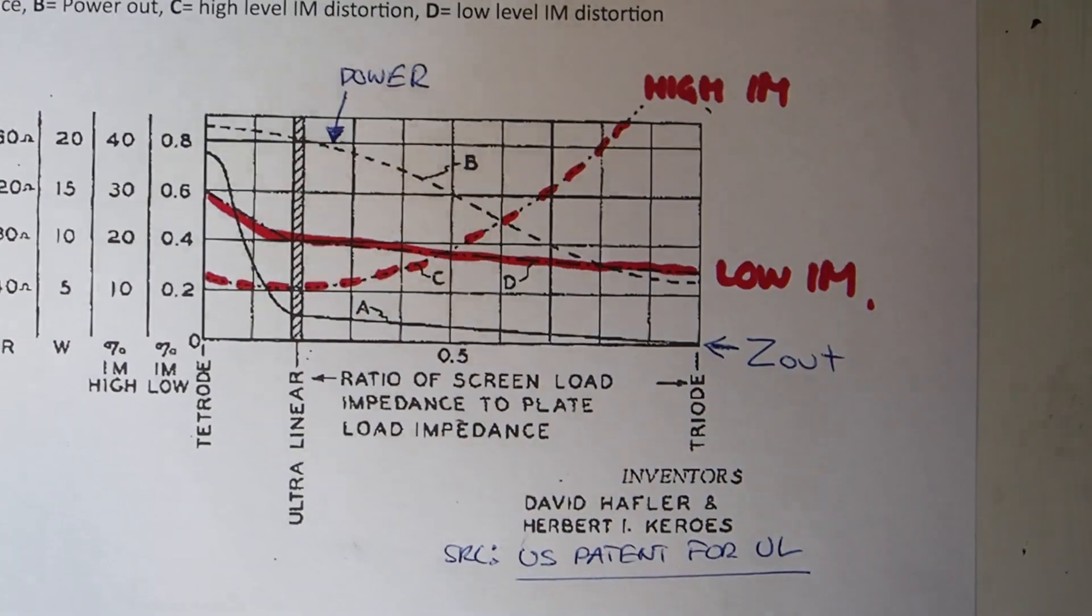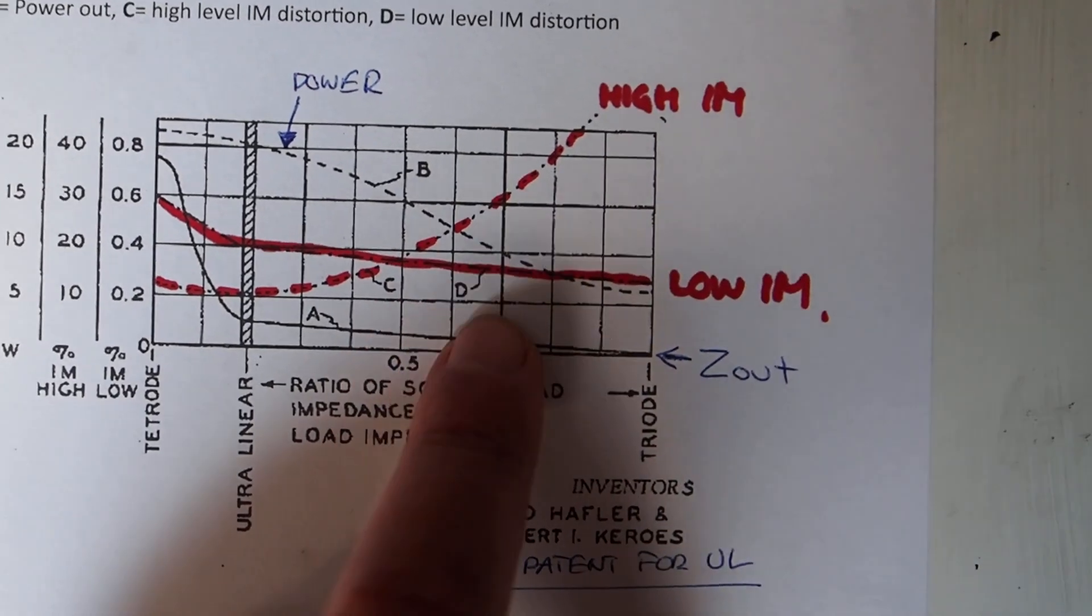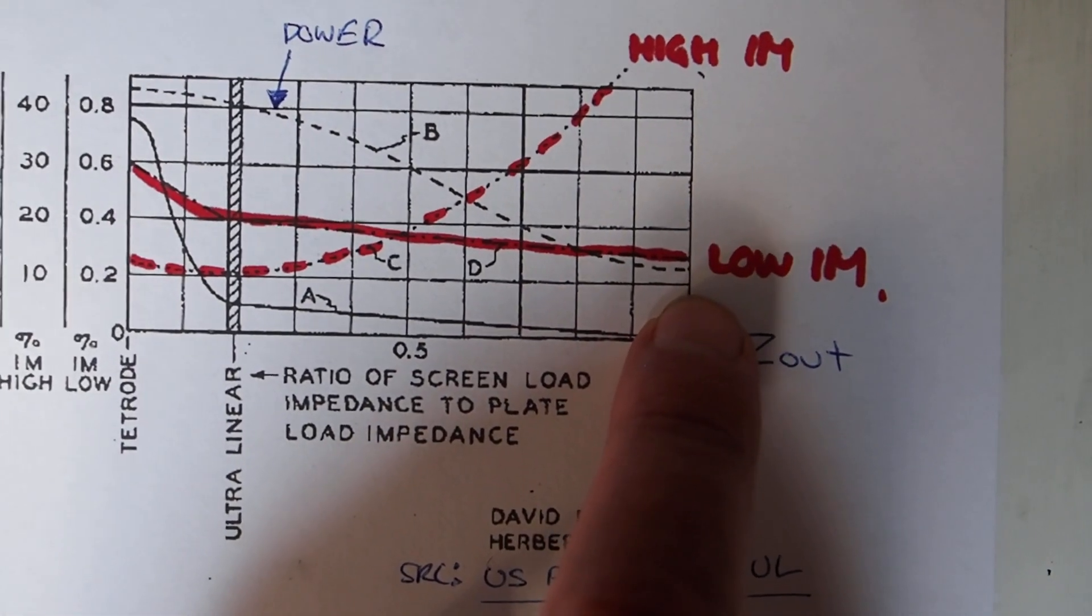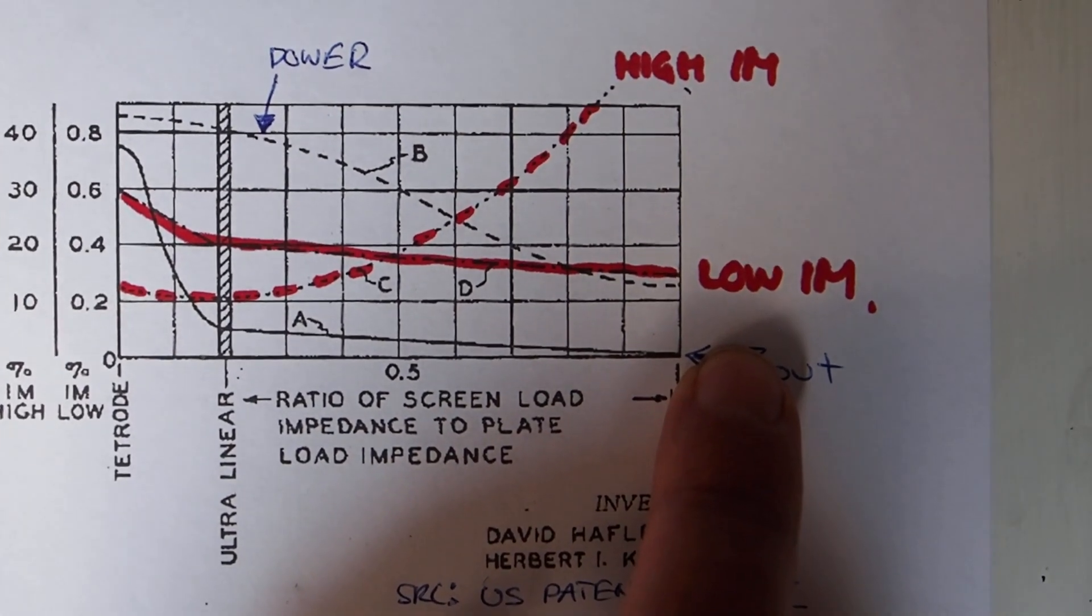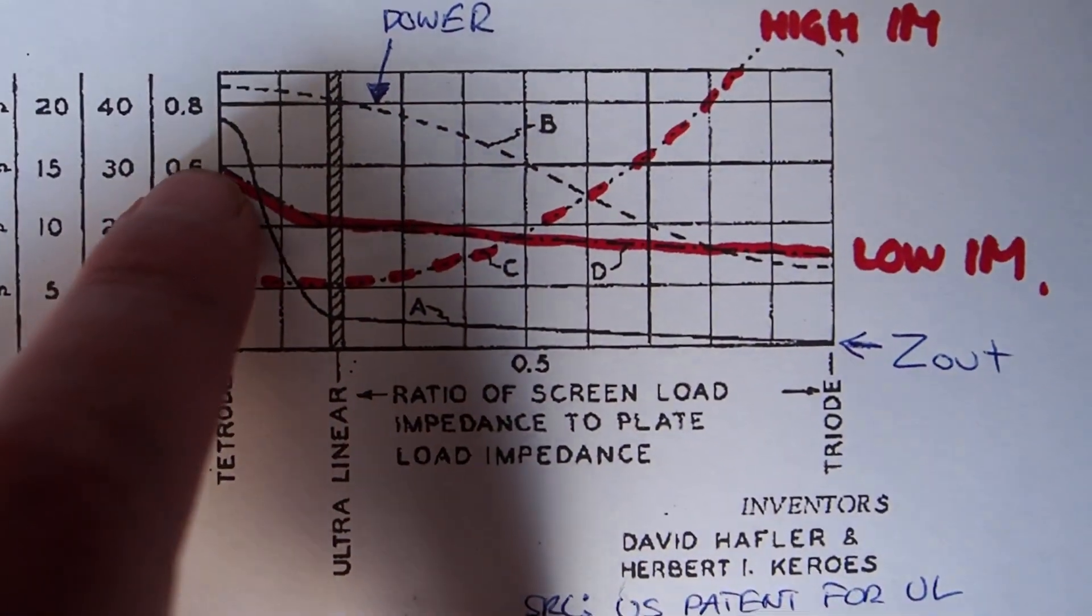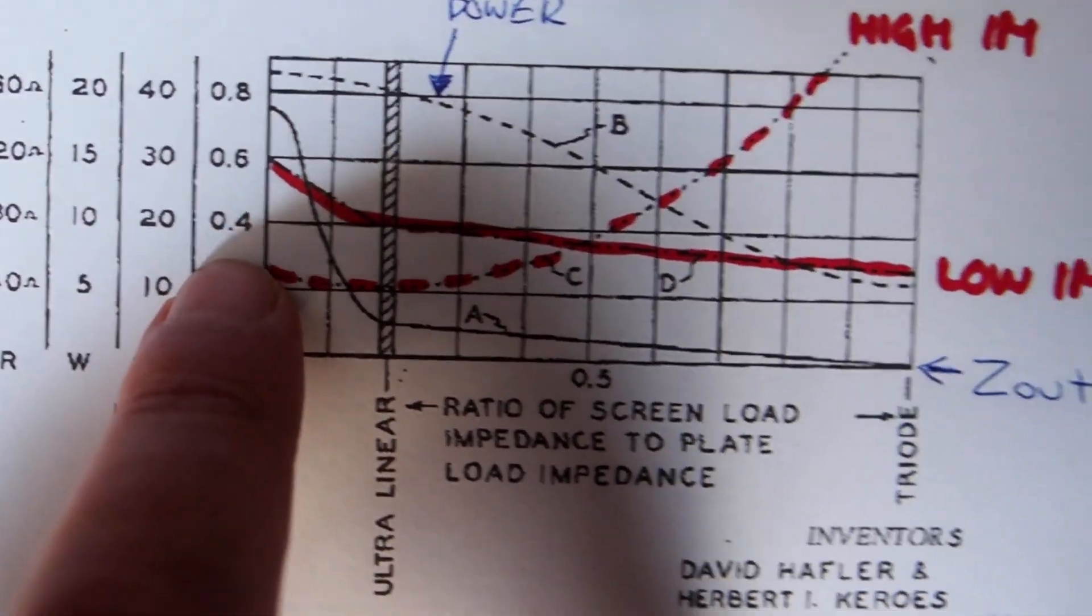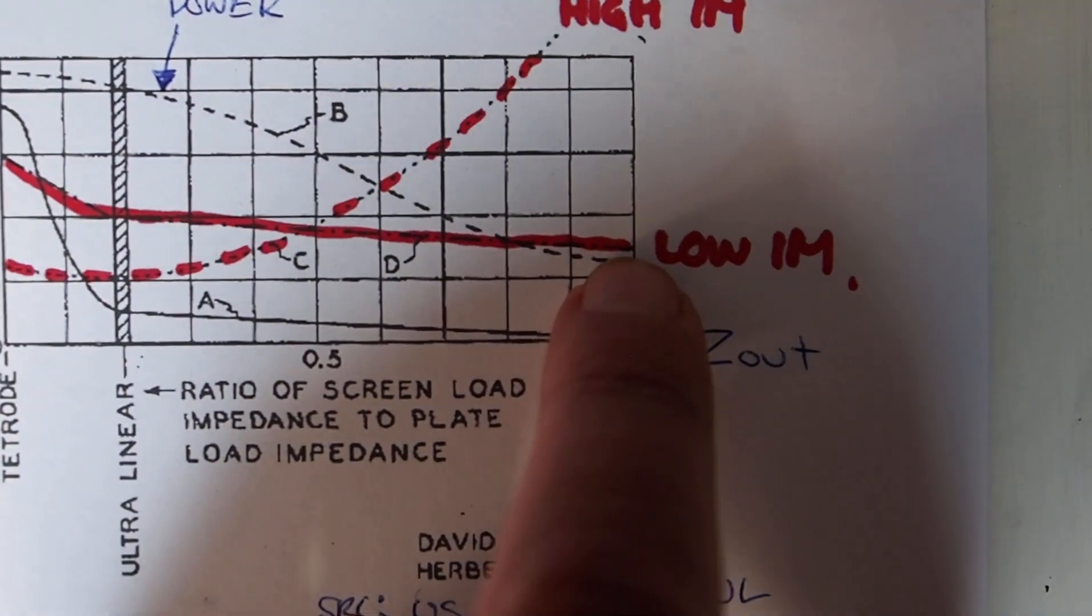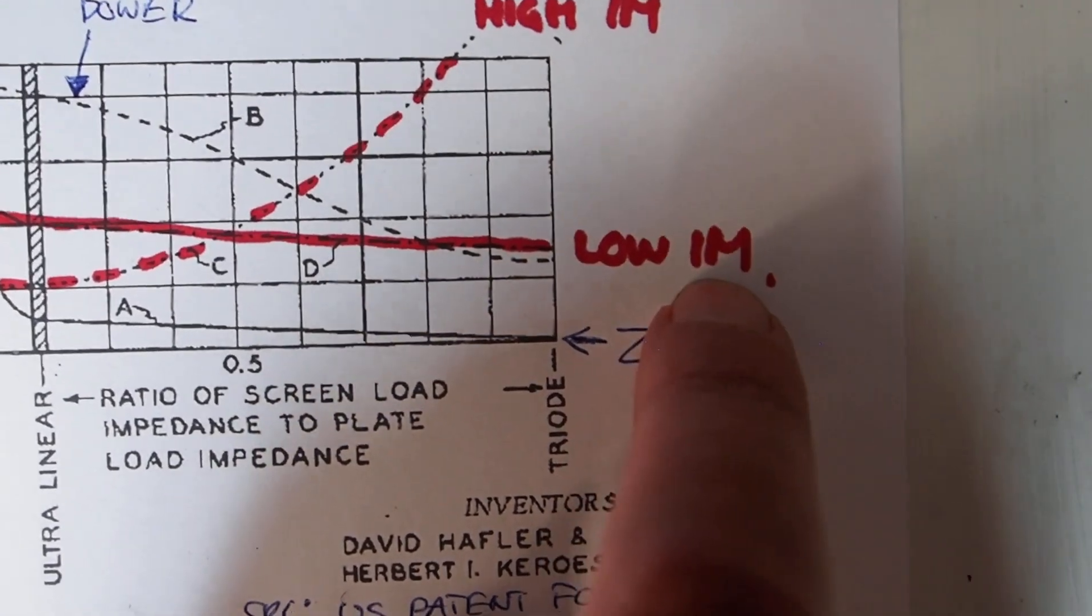But they put something else in there. Something that I heard that I really don't like when pentodes are driven to their max. These two red graphs that I just accented with the red marker represent the distortion level in intermodulation distortion. The continuous red line is at a low level. So low level intermodulation distortion, as you can see here, drops from 0.8 to 0.6 to 0.4 percent. When you have a low level signal, you can see it's a bit higher as a pentode. But then the triode has its famous low distortion, and it also shows up with low intermodulation distortion.